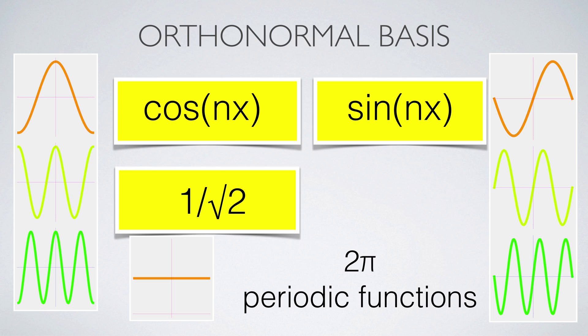The functions cosine n of x, sine of n of x, as well as the constant function 1 over the square root of 2, form an orthonormal set in the linear space x. They have been chosen because they all are eigenfunctions.